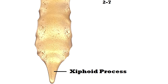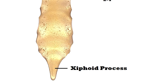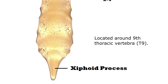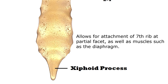The inferior or lower section of the sternum is called the xiphoid process. Whenever you see the word process in anatomy for a bone, it's just referring to a projection that comes off of a bone. The xiphoid process is a little projection coming off the inferior portion of the sternum and is made of cartilage until around middle age, at which point it usually turns into bone. It is located around the ninth thoracic vertebra and allows for the attachment of the seventh rib via the costal cartilage, as well as important muscles such as the diaphragm.